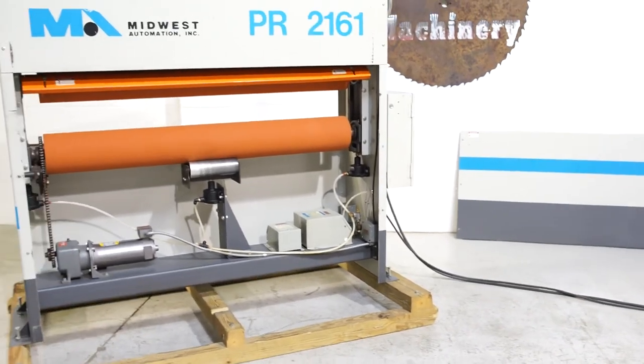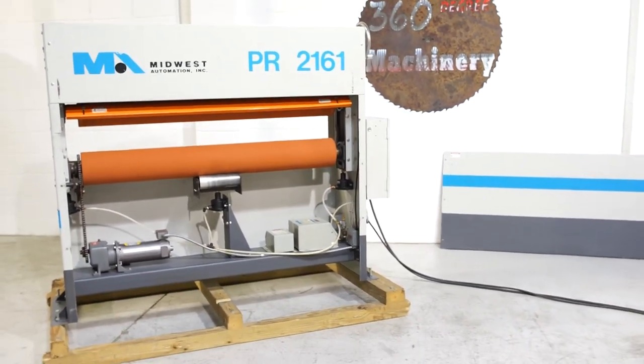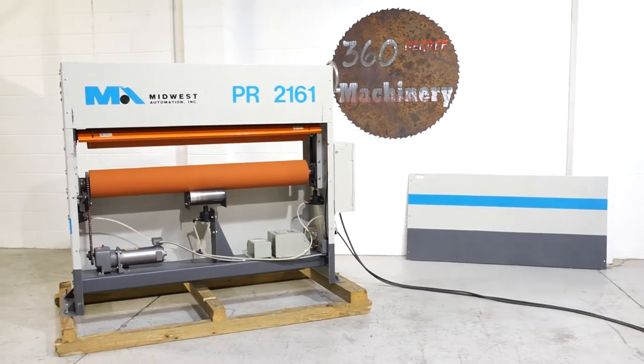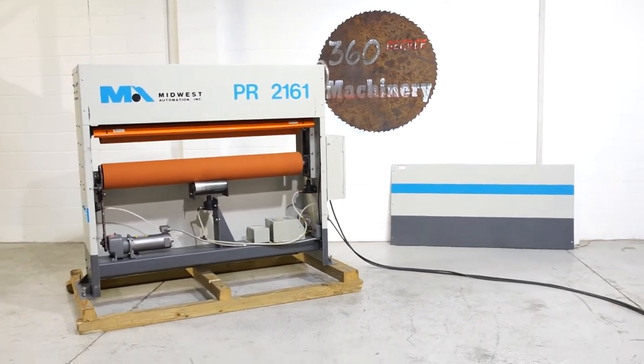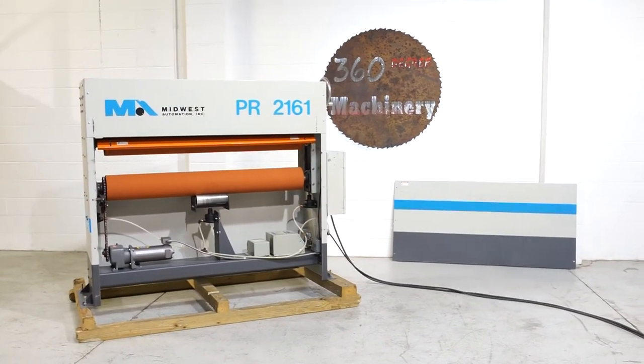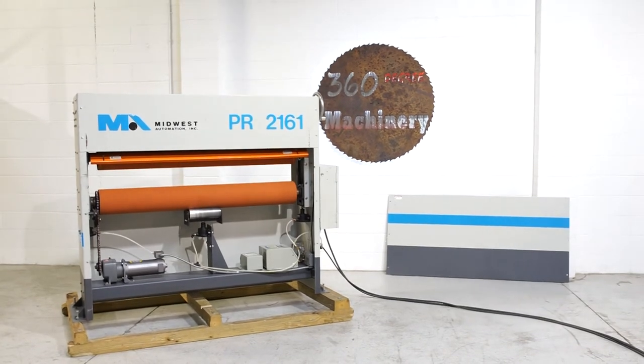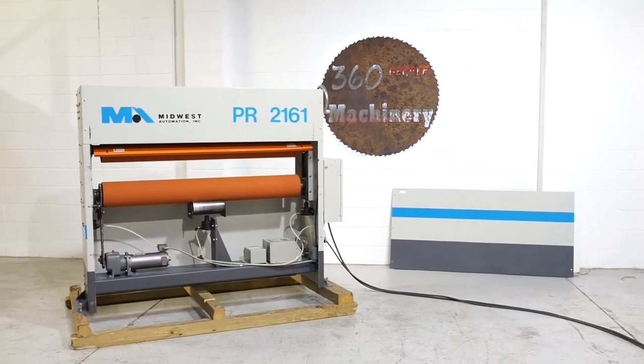If you have any questions or comments, you can reach us at info@360degreemachinery.com or give us a call at 630-229-6705. Again, thank you for tuning in to 360 Degree Machinery, helping you buy with confidence.